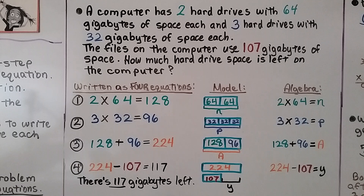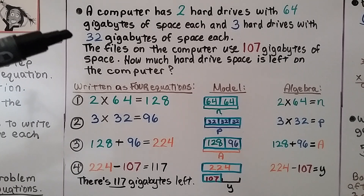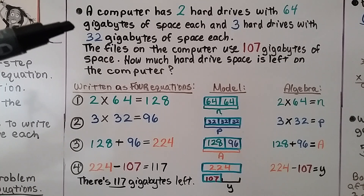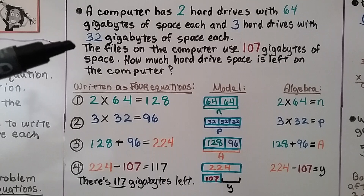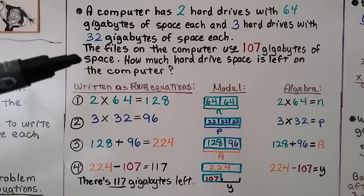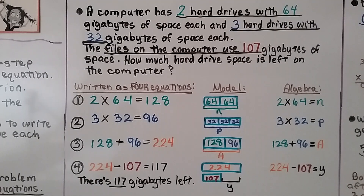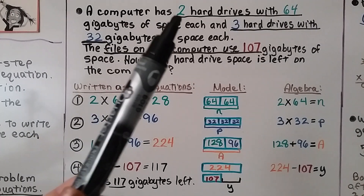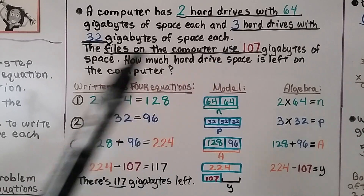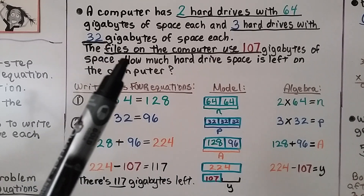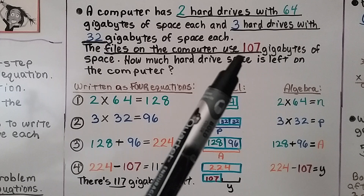A computer has 2 hard drives with 64 gigabytes of space each and 3 hard drives with 32 gigabytes of space each. The files on the computer use 107 gigabytes of space. How much hard drive space is left on the computer? The first thing we should do is underline the important information: 2 hard drives with 64 GB, 3 hard drives with 32 GB, and that files use 107 GB.